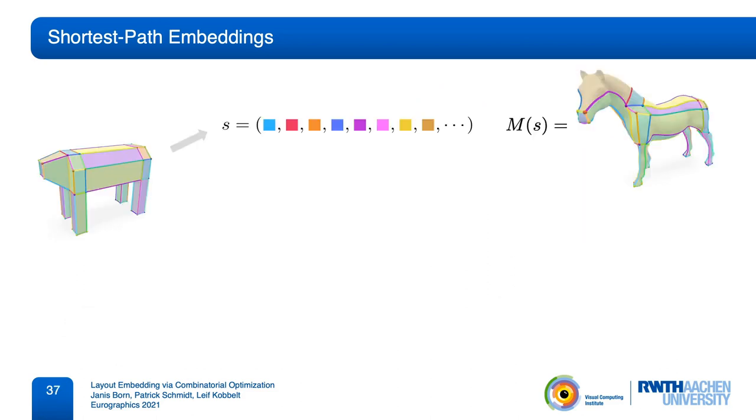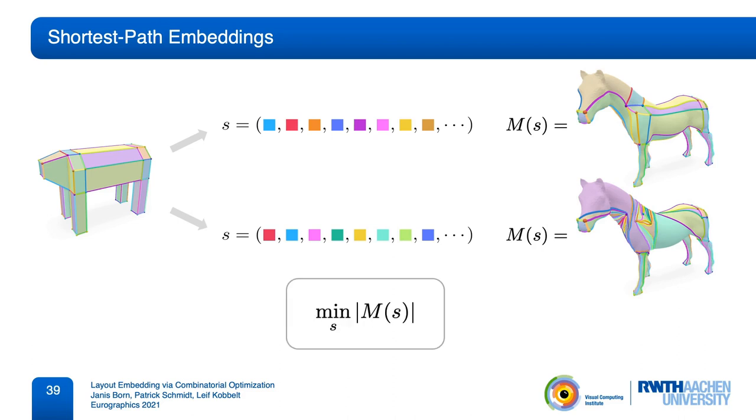We call these embeddings shortest path embeddings. Each of them is parametrized by an insertion sequence, a permutation of layout edges that defines a particular order of insertions. In general, different insertion sequences can lead to different embeddings of the same layout. Among these embeddings, we want to find the optimal one. We want an insertion sequence that produces a shortest path embedding with minimal total length.